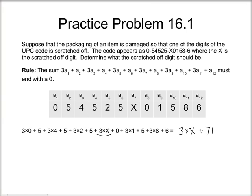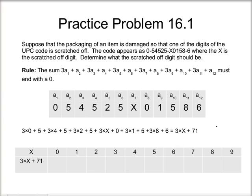So I need to find the digit X that's going to make this sum end in 0. I've got another little chart here. So I'm just going to plug in all of my possible digits for X, and we'll see which one makes the rule work.